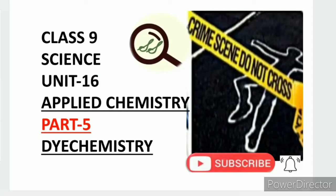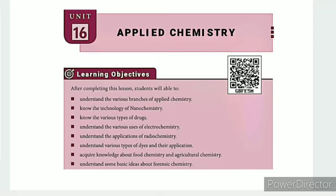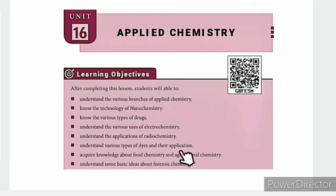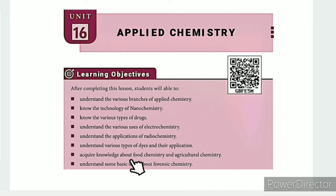Greetings from SS Class 9 Science, Unit 16: Applied Chemistry, Part 5 - Dye Chemistry. The learning objectives are: understand the various branches of applied chemistry; know the technology of nanochemistry; know the various types of drugs; understand the various uses of electrochemistry; understand the applications of radiochemistry; understand the various types of dyes and their application; acquire knowledge about food chemistry and agricultural chemistry; and understand some basic ideas about forensic chemistry.